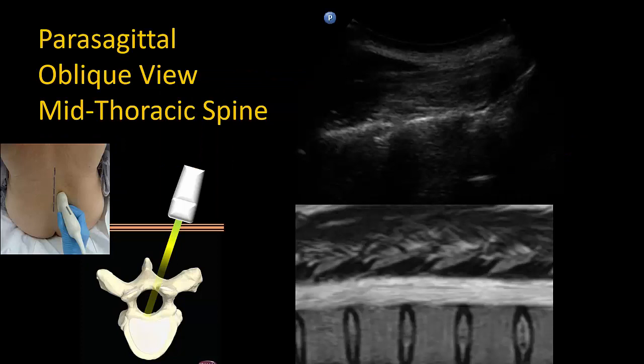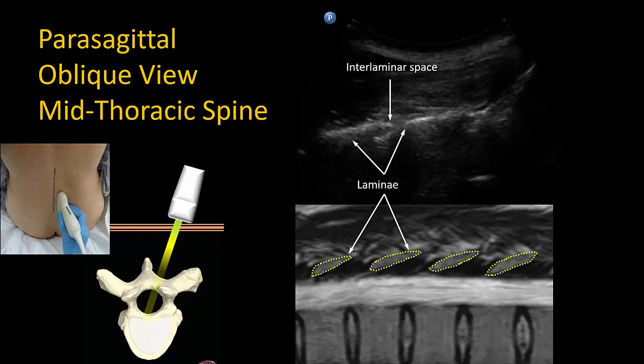The parasagittal oblique view provides the most useful information. The laminae in the thoracic spine have a flat, plate-like appearance, unlike the sloping sawtooth appearance of lumbar lamina. The gaps between these flat, hyperechoic lines is the interlamina space. Hyperechoic elements within this space are not necessarily the posterior complex — the laminae overlap, so this often represents the cranial edge or lip of the bony lamina and can obstruct needle passage if it is not advanced at an appropriately steep needle angle.